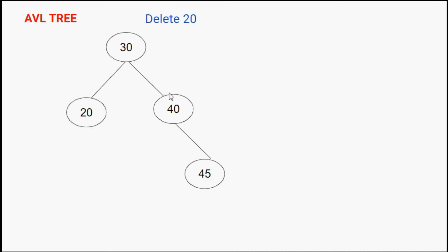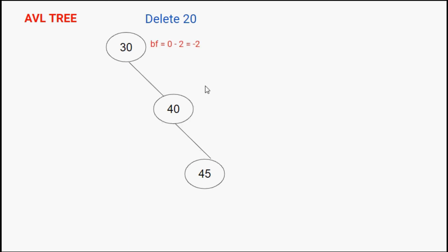After deleting node 20, let's recalculate balance factors. The balance factor of node 30: there is no node on the left side, and there are two levels of nodes on the right side, so the right subtree height is 2. Therefore 0 minus 2 gives minus 2 — this is an imbalance. The balance factor of node 40: no left child, so 0 minus 1 gives minus 1.